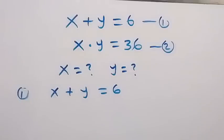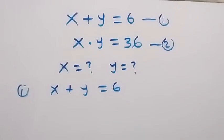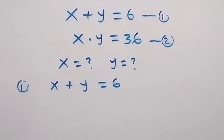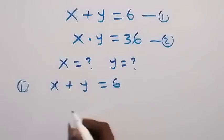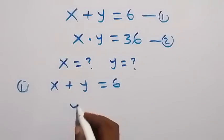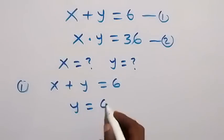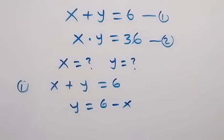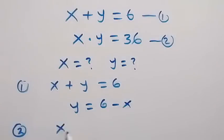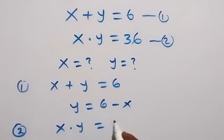And from here, let's make y the subject and we take x to this side. So from here, we have y equals to 6 minus x. Then from equation 2, we have x times y equals to 36.